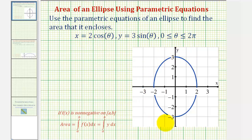So the graph of our ellipse would look like this on the coordinate plane. To find the area using these parametric equations, we're going to use the fact that we know that if a function of x, or f of x, is non-negative on the closed interval from a to b on the coordinate plane,